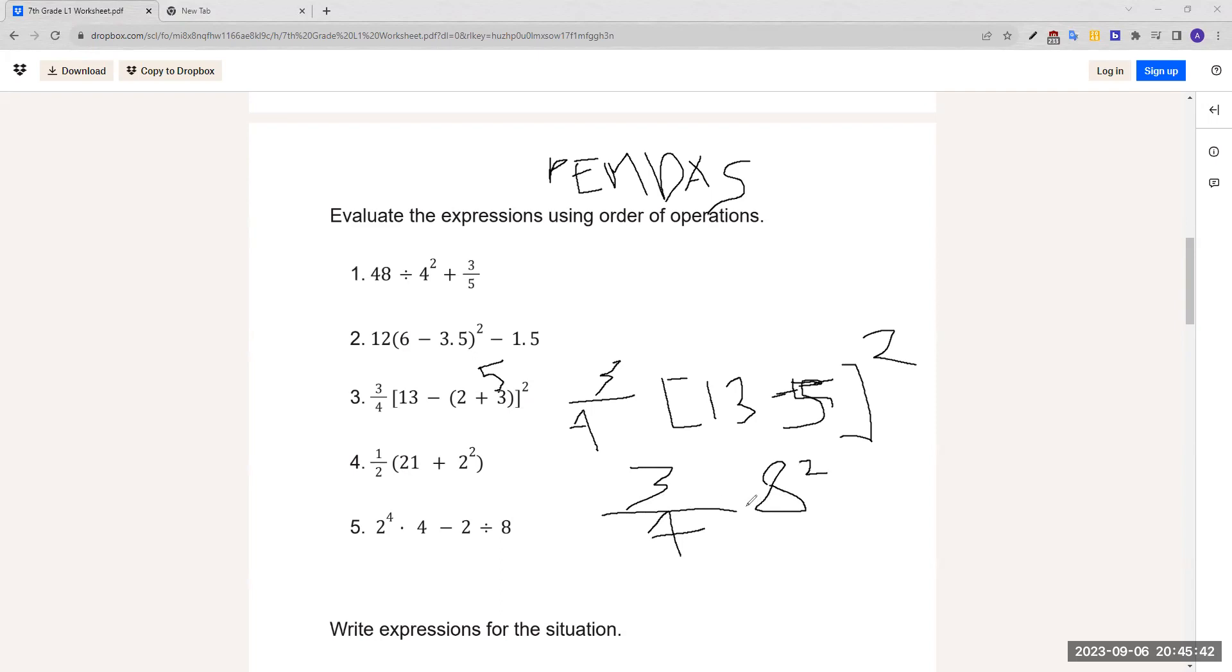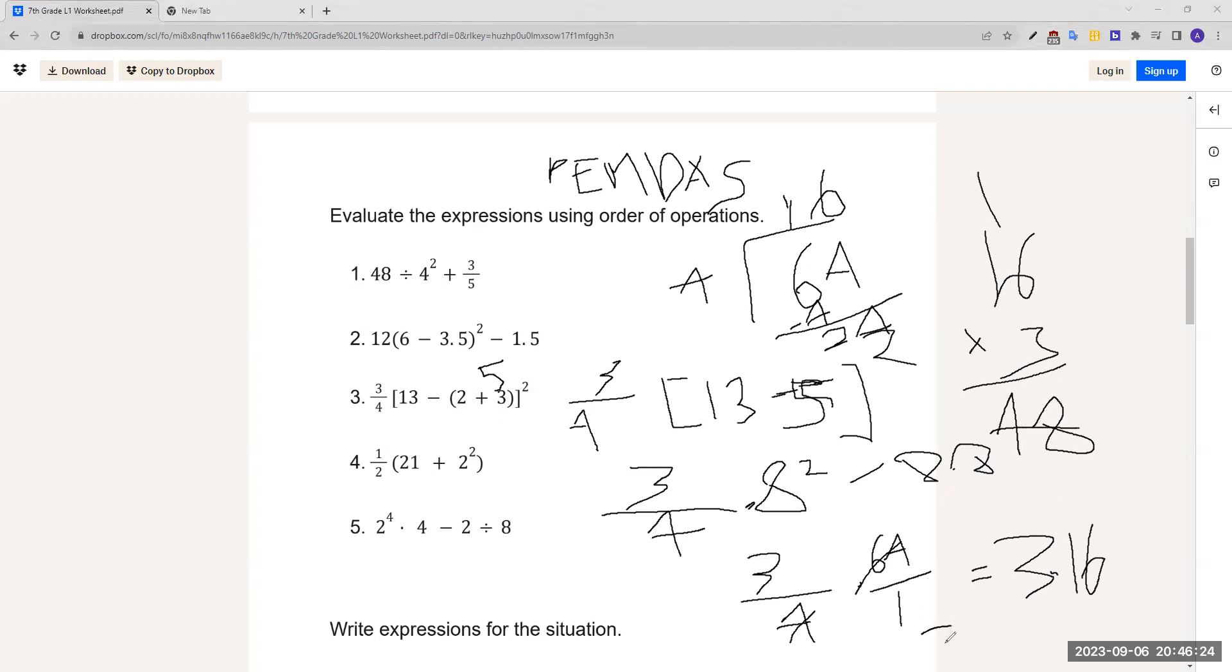So 3 over 4 times 8 squared. 8 squared is just 8 times 8, so it would be 3 fourths times 64 over 1. But can we simplify this further? Yeah, we can. Dividing the 64 by 4 itself, you would get that. So it would be 3 times 16. When we multiply that, we get 48. So that's our answer.